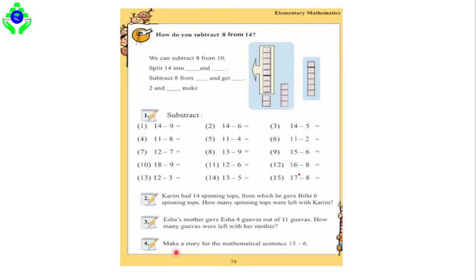Question number 3: Isha's mother gave Isha 4 gravas out of 11. How many gravas were left with her mother? At first her mother had 11 gravas. When she gave Isha 4, the total number decreased. As I mentioned, whenever the total number decreases in any question, you should apply the concept of subtraction.